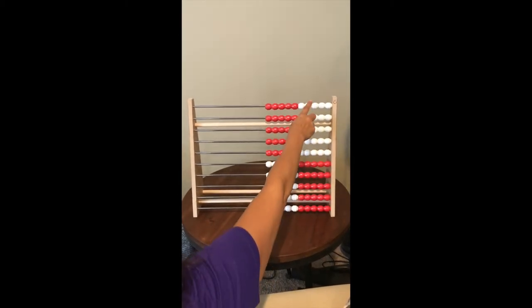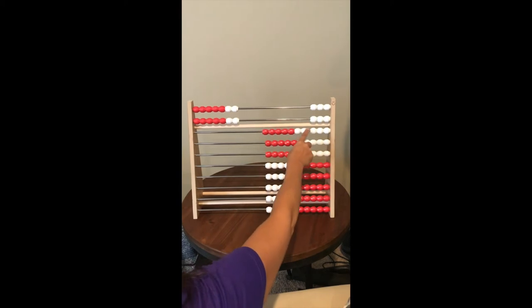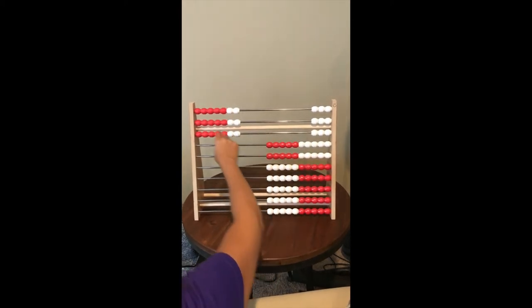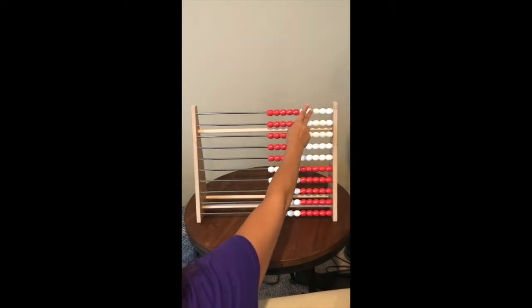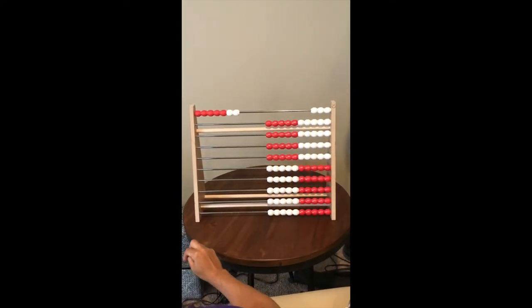When doing skip counting, you don't want kids to continue just putting 7 on each row because it's not helping them develop the patterns of multiplication. Instead, we want kids to be able to skip count by 7 by showing 7 beads.